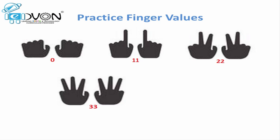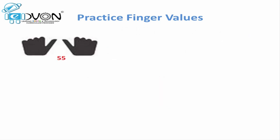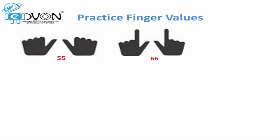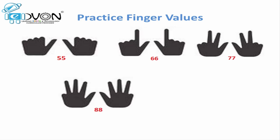When three fingers on both hands are open, it represents 33. When all four fingers on both hands are open, it represents 44. We represent 55 with thumbs on both hands. To represent 66, we open the thumb and one finger on both hands. For 77, we open the thumb and two fingers. For 88, we open thumb and three fingers. And to place 99, we open the thumb and all four fingers on both hands.